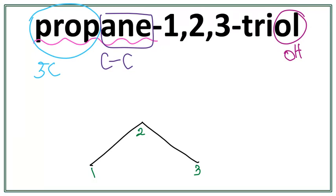Now we see the word 'tri' here. This 'tri' tells us that we have three groups of OH present, so we have three OH groups. One of them is on the first carbon, the other one is on the second carbon, and the other one on the third carbon.